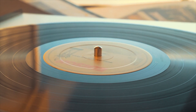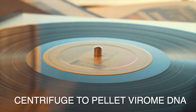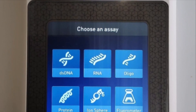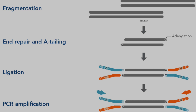The pellet will be very tiny, so be sure to orient your tube so you know exactly where the pellet should be. Dry the ethanol off and measure how much DNA you have using a fluorescent-based readout such as the Qubit, or you can use a nanodrop. The next steps are to make a DNA library by fragmenting the DNA, ligating adapters specific to your sequencing instrument, and then having a bioinformatician determine which viral sequences are contained in your sample.